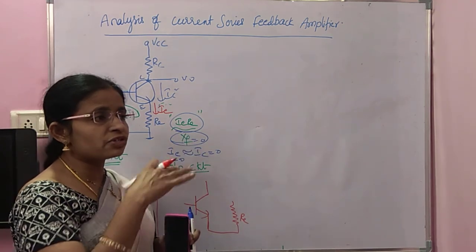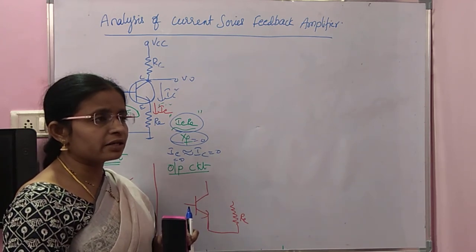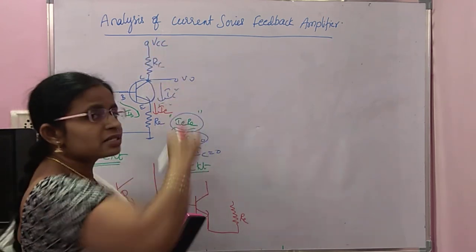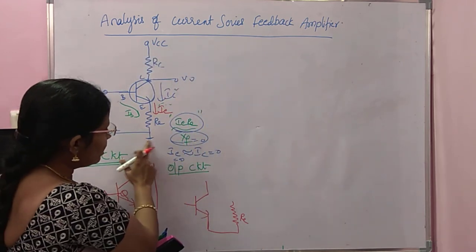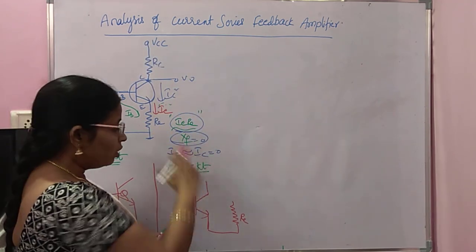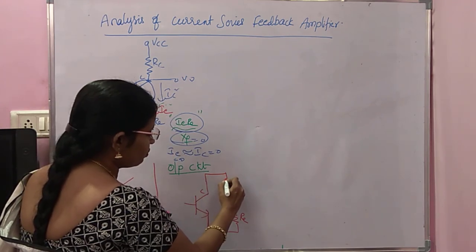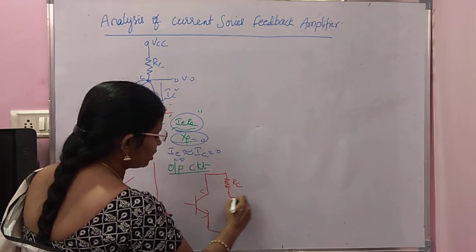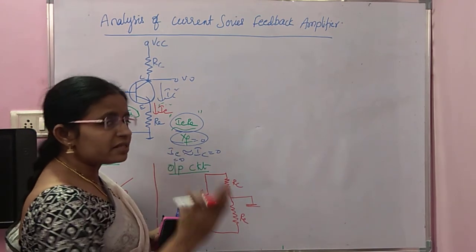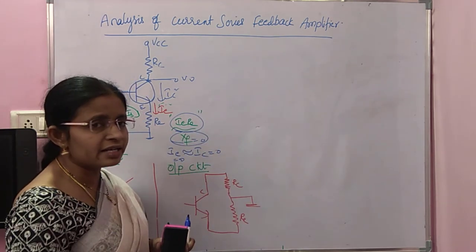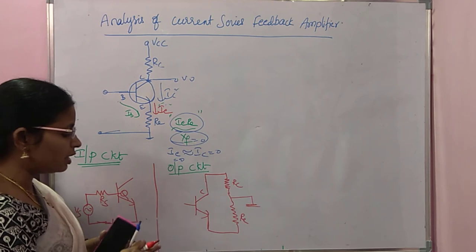The next step is to draw the H-parameter equivalent model for the input-output circuit. The H-parameter model is for the AC equivalent circuit. To draw the AC equivalent, we make VCC equal to 0, so RC's other end goes to ground and RA's other end is also at ground. Now we will club these two circuits to find the total input-output circuit.